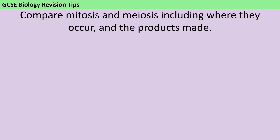Usually at this point I'd remind you that this isn't an essay question and your spelling and grammar doesn't really matter, but actually there are certain pairs of words which are so similar that you have to spell them perfectly, otherwise your examiner doesn't know which one you mean. Meiosis and mitosis is one of those pairs of words, so it's really important that you use the wording in the question to double-check your spelling and make sure you're getting full credit.